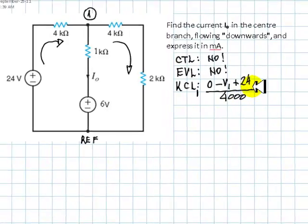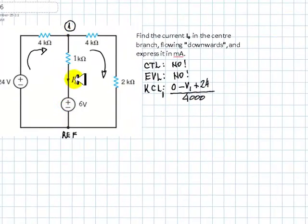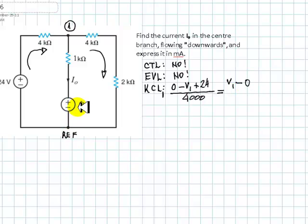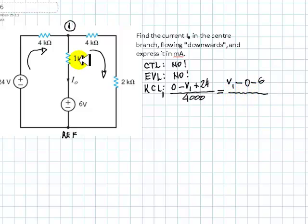That equals the currents leaving the node. The first leaving current is also an RV branch. That current is written as: voltage of the origin V1, minus the voltage of the destination which is the reference zero, plus or minus the value of the source. In this case the source is opposing the chosen direction of the current, so it's minus 6, divided by the resistance in the branch: 1,000 ohms, or 1k.